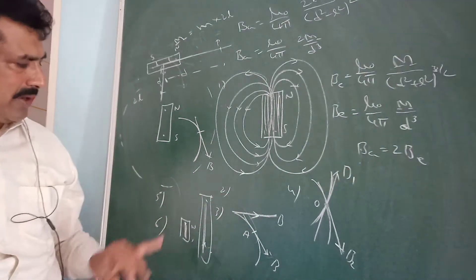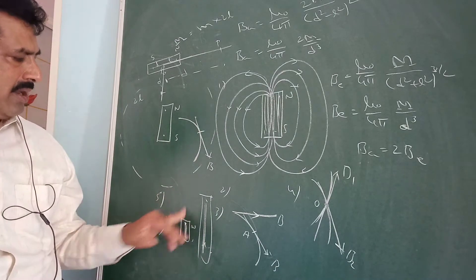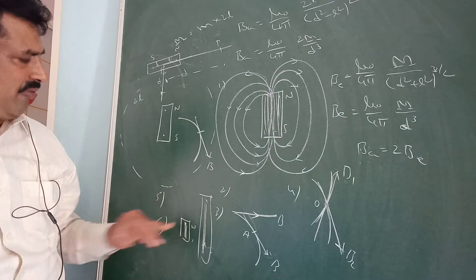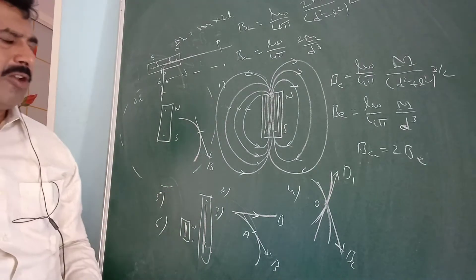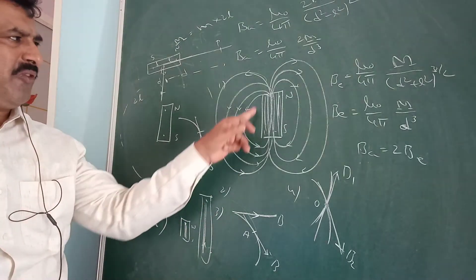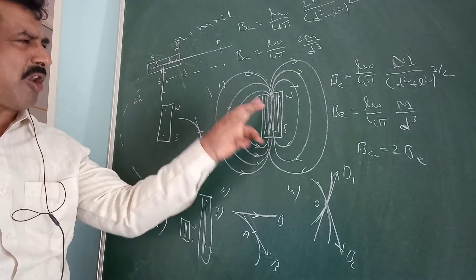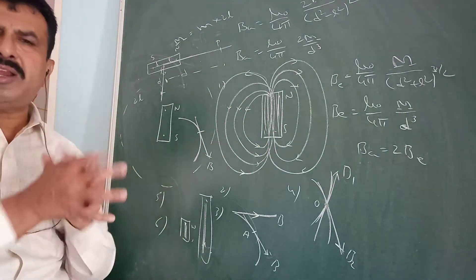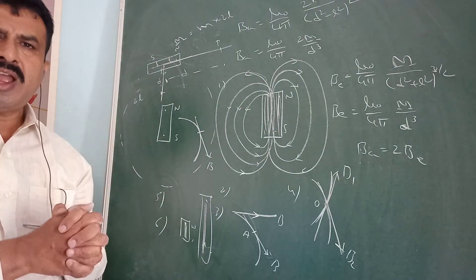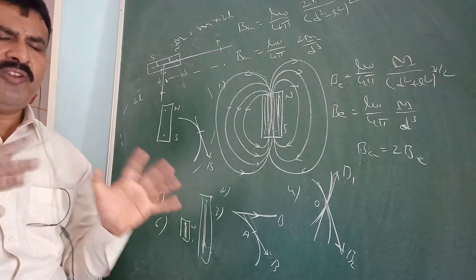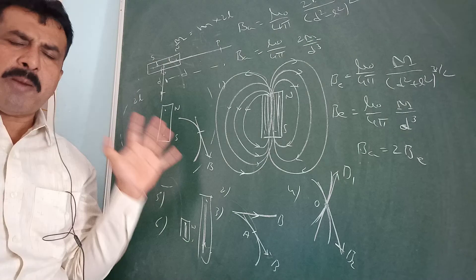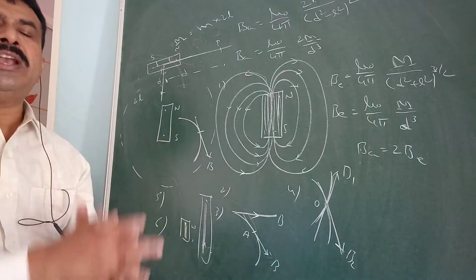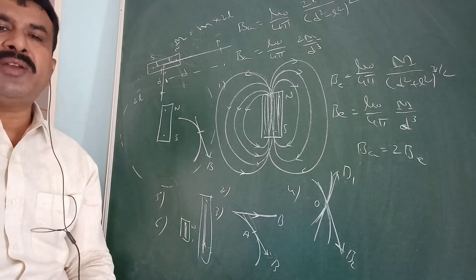The fifth property: magnetic field lines are crowded in the region of greater intensity, and magnetic field lines are spread apart in the region of weaker intensity of the magnetic field.